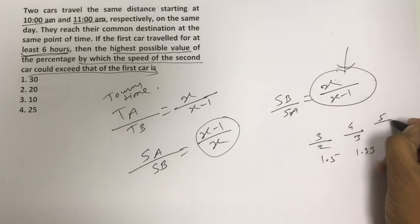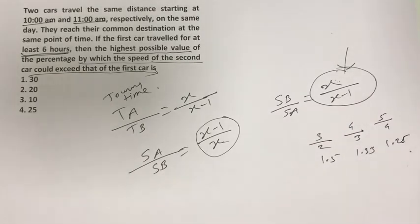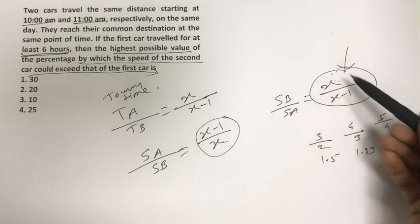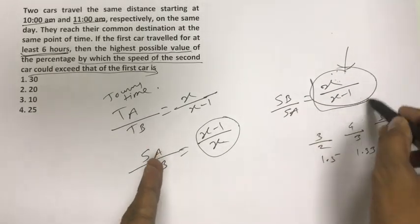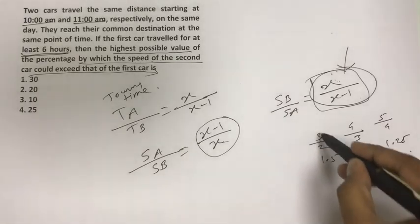If we write x=5, then it will be 5 divided by 4, which is 1.25. So you can understand this trend that if the value of x is greater, then the ratio is smaller. And we don't want to keep it small.